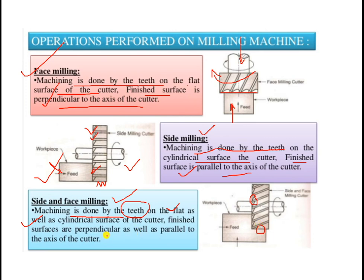In side and face milling, multi-point cuttings are available on both the flat and the cylindrical surface. The finished surfaces are both perpendicular to the axis as well as parallel to the axis of the cutter. One surface is parallel and another surface is perpendicular to the axis of the cutter, depending on which operation — side milling or face milling — is being performed.